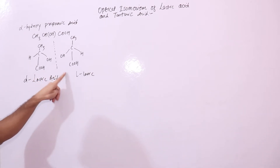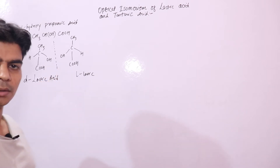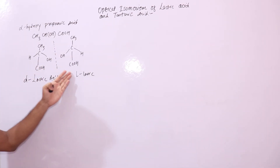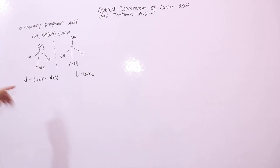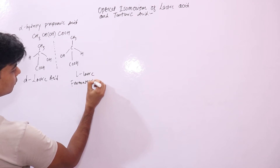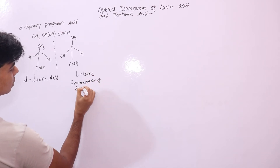These two are mirror images of each other, and we call these enantiomers. Enantiomers are optically active isomers which are mirror images of each other. D-lactic acid is mainly found in fats — this acid is obtained from fats. L-lactic acid is obtained from fermentation of sucrose, which is a carbohydrate.